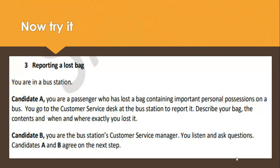Here's an example — the one I keep using. You are in a bus station. Role A: you are a passenger who has lost a bag containing important personal possessions on the bus. You go to the customer service desk to report it. Describe your bag, the contents, and when and where exactly you lost it. You should use your pencil and the paper on the desk to write down some notes because you will forget details if you're not careful. Role B: you are the bus station's customer service manager. You listen and ask questions and then agree on the next step.